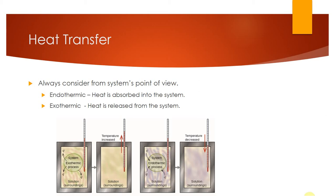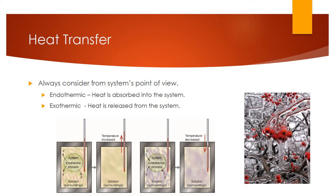We can think about this in real-world applications. Down in Florida where they have citrus fruits, if they hear there's going to be a hard freeze that could threaten their crop, they go out and spray the fruit with water. As this water freezes, heat exits the water and goes into the fruit. So the exothermic process of freezing water keeps the fruit from freezing and saves the crop, as long as the freeze is temporary.